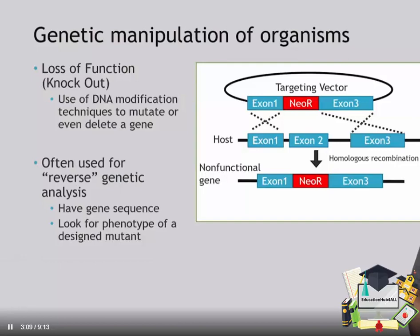Molecular biology has developed new tools for manipulating the genomes of organisms. A commonly utilized one is a loss-of-function mutation, also known as a knockout. This uses DNA modification techniques to mutate or even delete a gene. Knockouts are often used for reverse genetic analysis — that is, we have a gene sequence and then we look for a phenotype of a designed mutant.